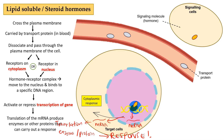So for lipid-soluble hormones, remember: number one, they can simply cross the lipid bilayer; number two, they require a transport protein to be transported in the blood; and number three, they have receptors that bind inside the cell — intracellular receptors — which can be cytoplasmic or inside the nucleus.